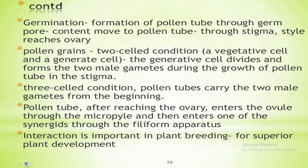In some plants that shed pollens at two-cell condition, the generative cell divides and forms the two male gametes during the growth of the pollen tube into the stigma. In plants which shed pollen in the three-cell condition, pollen carry the two male gametes from the beginning.